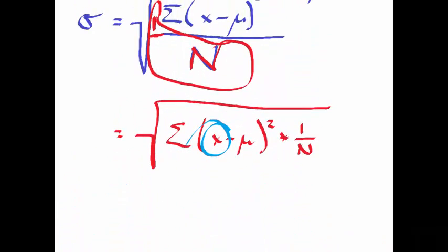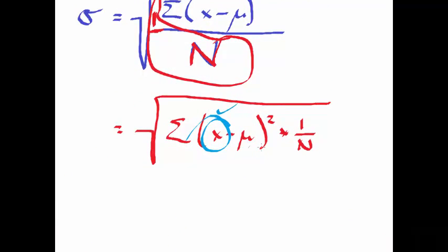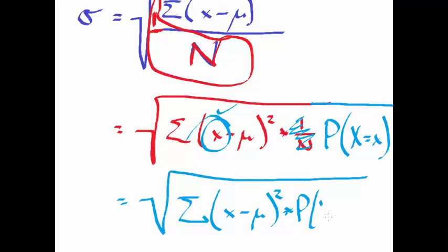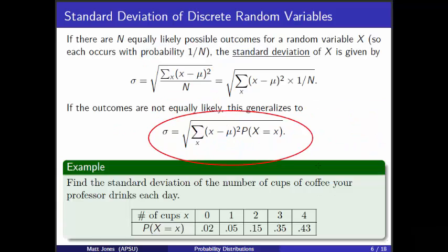In a similar way, when we talk about standard deviation, what if each value in the population isn't equally likely? Instead of dividing by 1/n uniformly, we weight each squared deviation by the probability that the random variable takes on that value. That gives you the general formula: the standard deviation of a random variable is the square root of the sum of squared differences from the mean, weighted by the probabilities.